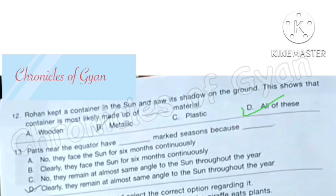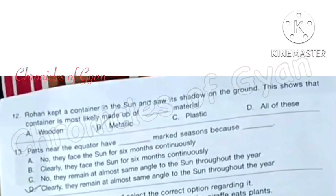Question 13: Parts near the equator have dash marked seasons because dash. Option C. Parts near the equator have no marked seasons because they remain at almost same angle to the sun throughout the year.